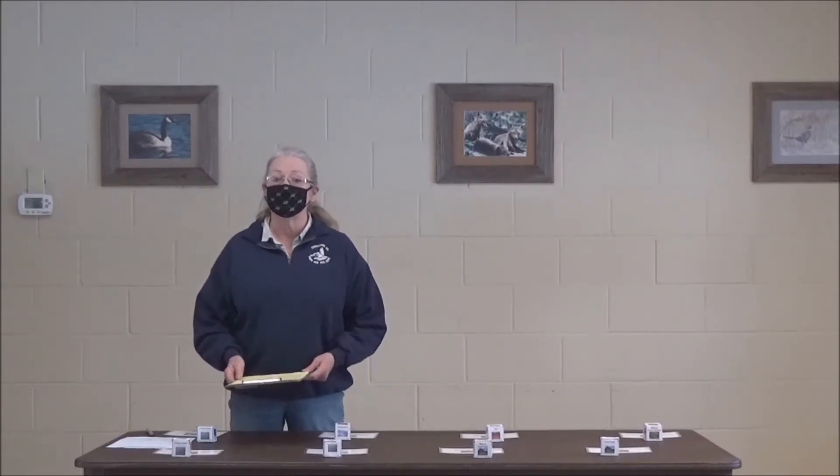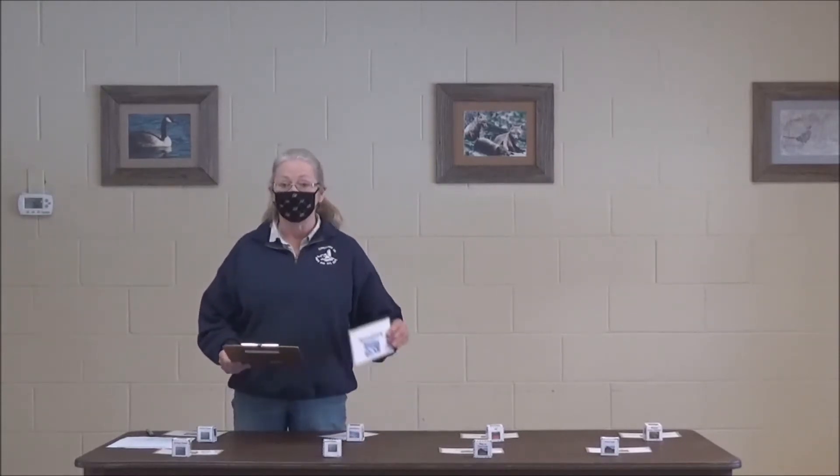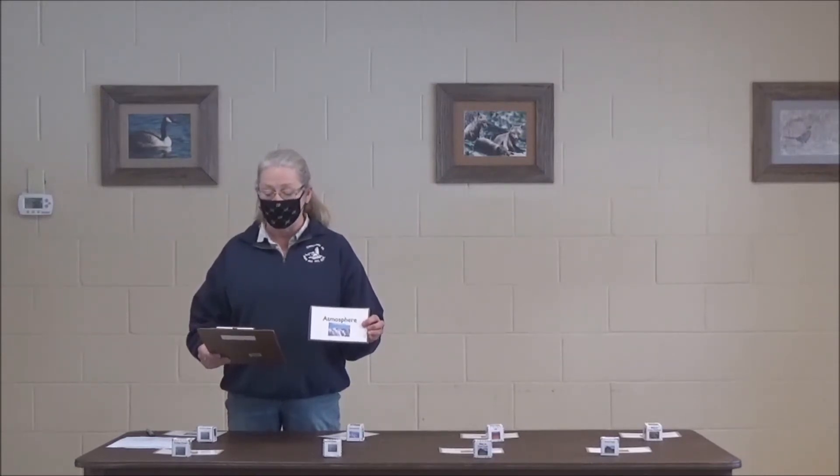Let's spend a couple minutes reviewing how carbon is found in these different locations and how it's able to move in various ways to other parts of the planet. First of all, carbon can be found in the atmosphere. Carbon is paired with two atoms of oxygen in the form of carbon dioxide. It can remain in the atmosphere, become part of plants through photosynthesis, or dissolve in ocean waters.